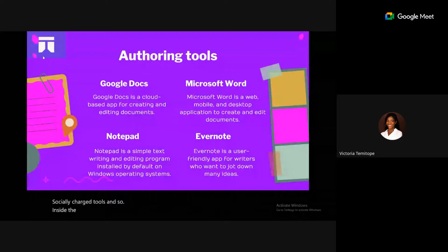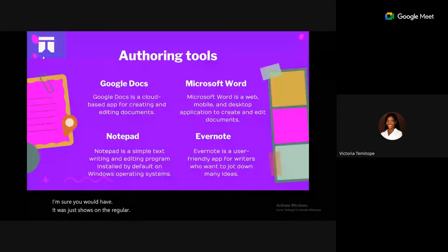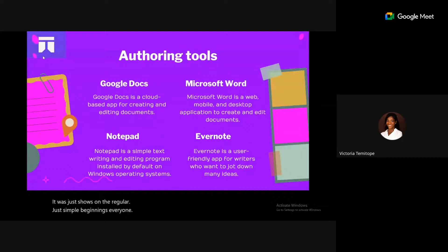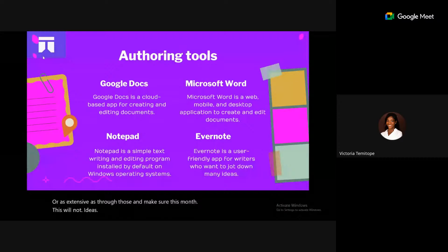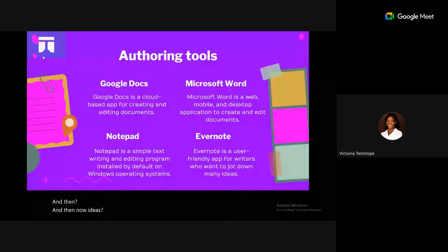Notepad is a Windows-only tool where you can write and edit simple documents, but it's not as flexible or extensive as Google Docs or Microsoft Word — you cannot add images or format as you want. Evernote is a user-friendly tool for jotting down ideas, available for Android, iOS, Windows, and Mac. You can even create notes from images and photos.